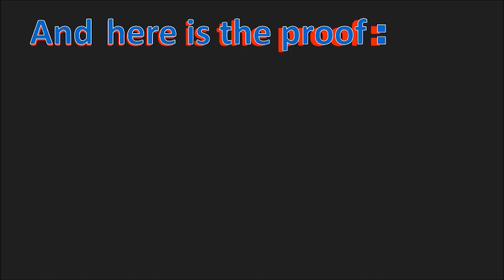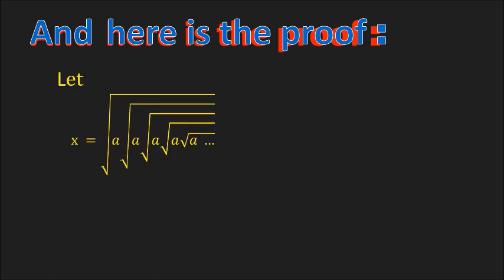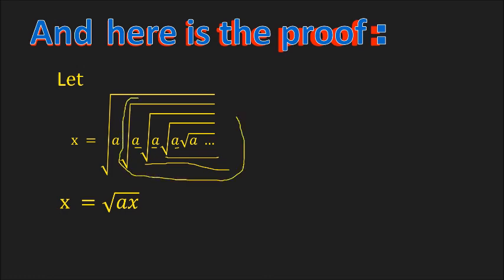And now, here's the proof. If we let x be equal to the square root of a times the square root of a times the square root of a, repeated infinitely many times, then we have x equals the square root of ax. Why? Because this inner expression is also x — so we replace the square root of a times the square root of everything inside with x.